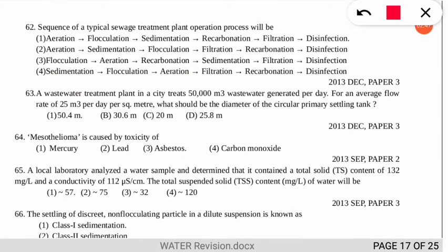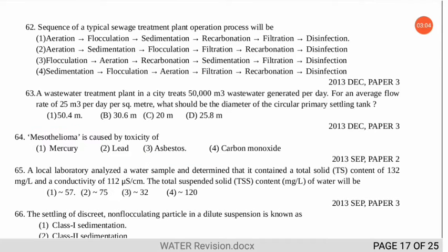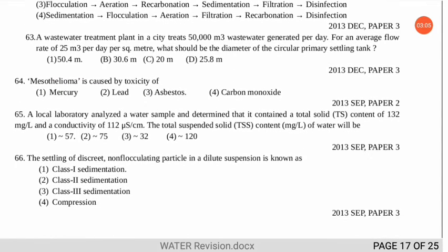Question 64 asks about mesothelioma — which element's toxicity causes it. The correct option is number 3 — asbestos. Asbestos causes mesothelioma, which involves respiratory issues.